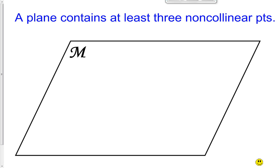Number four: a plane consists of at least three non-collinear points. In order for a flat surface — which is a plane — to exist, there have to be at least three points. Remember, a plane goes infinitely in all directions. You need at least three points to define a flat surface, though there are in fact an infinite number of points on a plane.